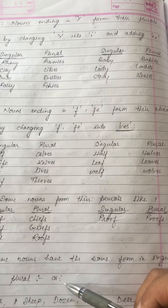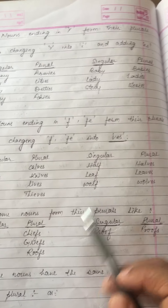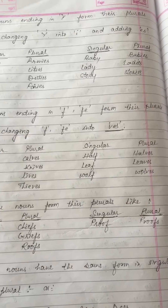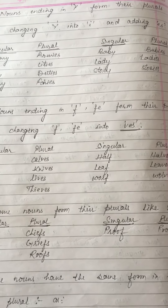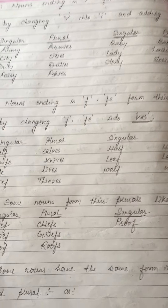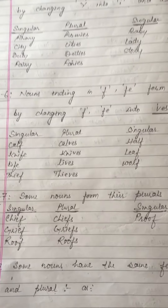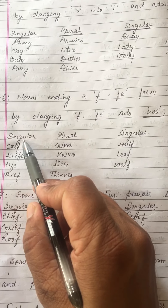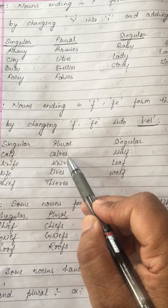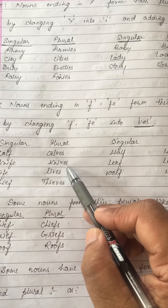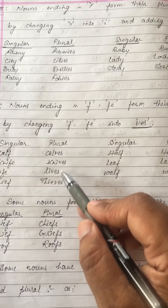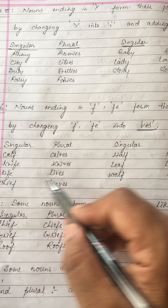Rule number six: nouns which end with 'f' or 'fe' form their plurals by changing 'f' or 'fe' into 'ves'. You can see: calf ends with 'f' so we add 'ves' in place of 'f' — calves. Knife becomes knives, life becomes lives, thief becomes thieves — we are omitting 'f' or 'fe' and adding 'ves'.